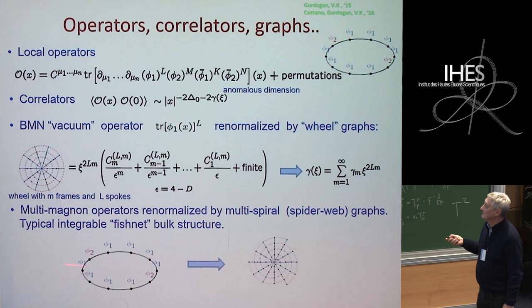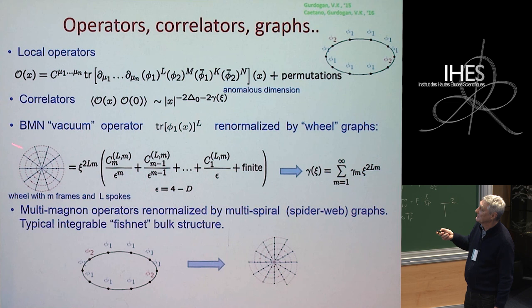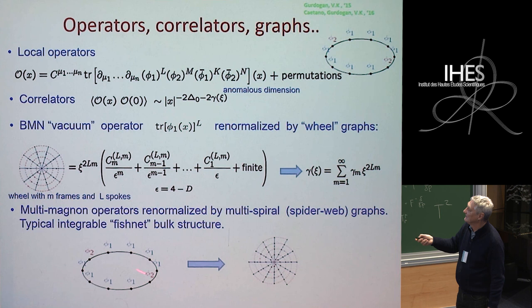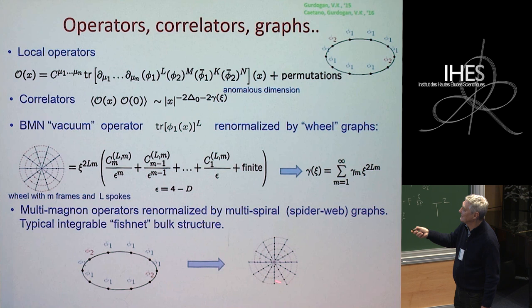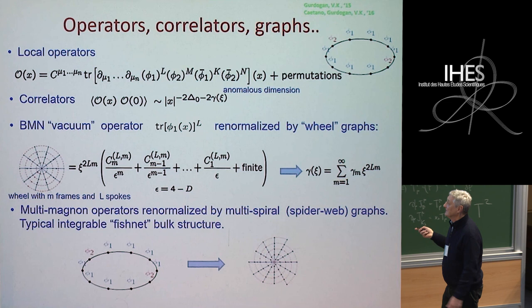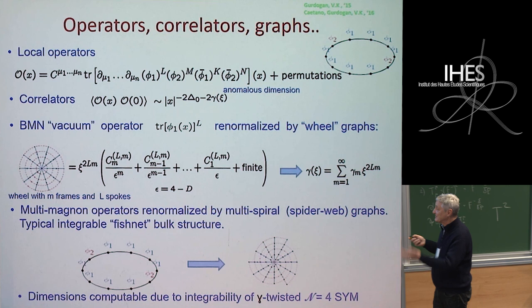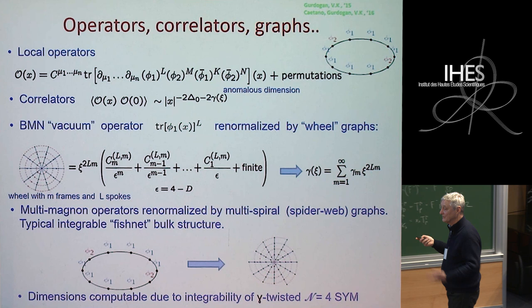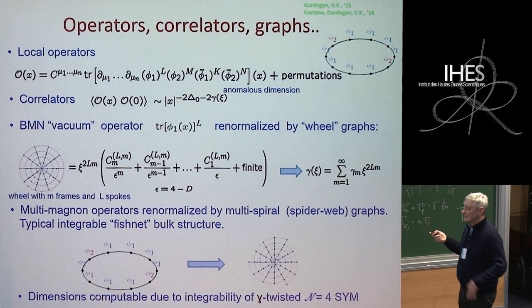There are interesting generalizations. This vacuum case is called the wheel diagram, but there are also multi-spiral or spiderweb diagrams when you have a couple of magnons. When you have magnons, they start turning around — it is the only possible kind of vertex — giving a multi-spiral configuration, which is also integrable. In principle, the dimensions of this theory can be computed by the integrability machinery developed for N=4 super Yang-Mills including gamma deformation, but you have to go to this special double-scaling limit.